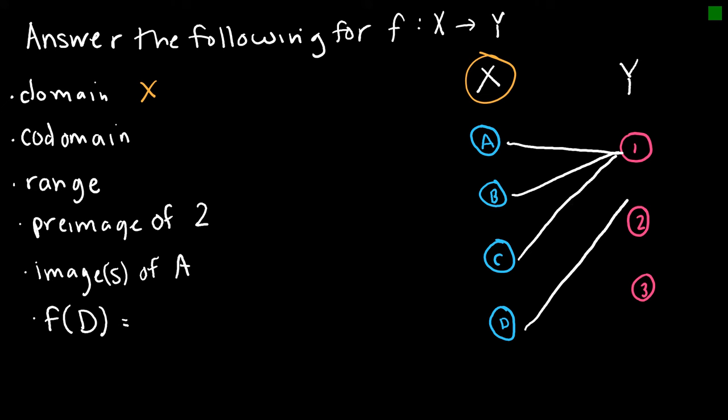The codomain would be set y, which is all of the values in that codomain. The range would be only the values of 1 and 2. So the set of values containing 1 and 2. The preimage of 2 says what value mapped to 2. And then we can see here that that would be D.